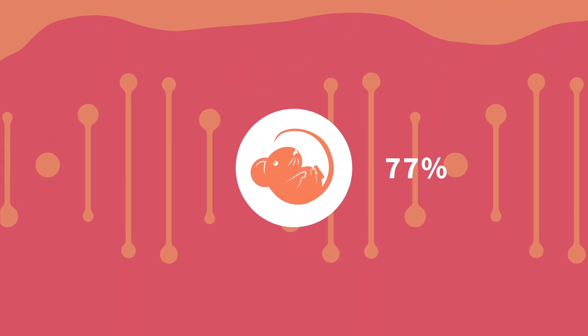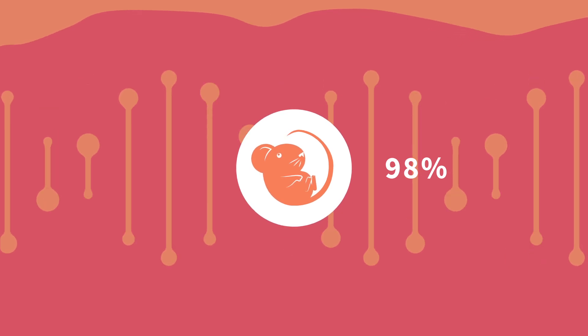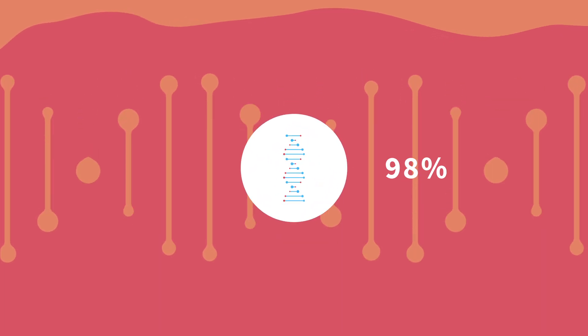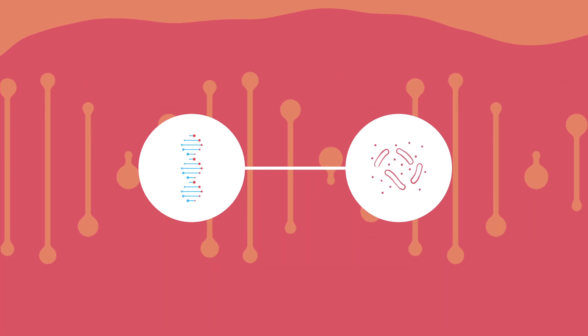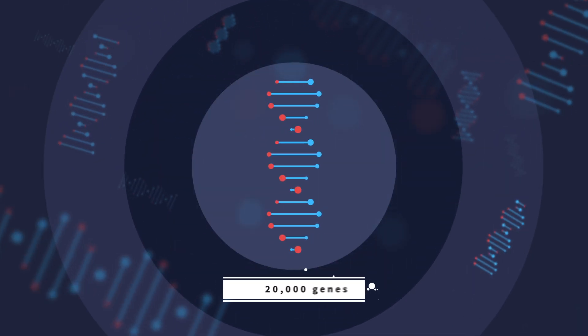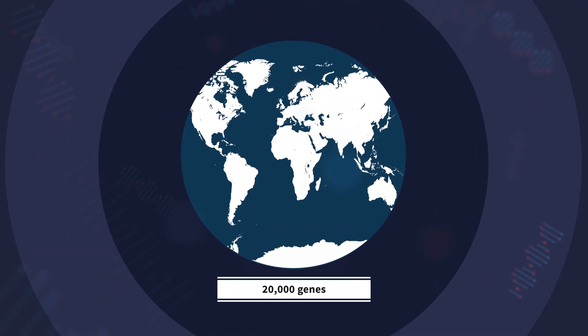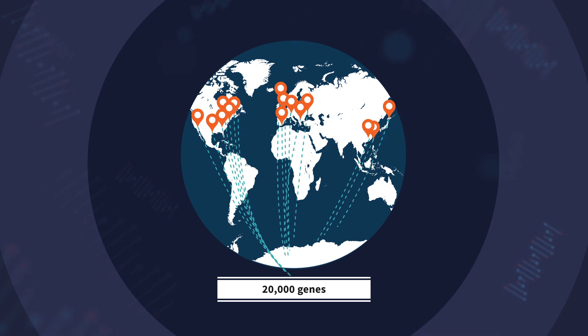We share 98% of our genes with mice and can learn a lot about the connection between genes and disease by studying mice that have had different genes switched off. With 20,000 genes to study, it's too big a job for one laboratory, so the IMPC coordinates efforts among its members.